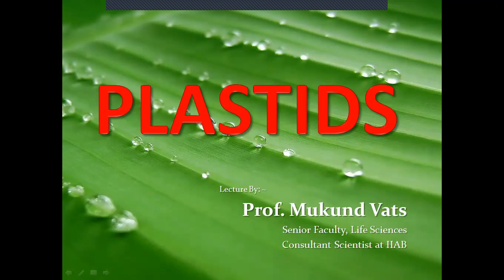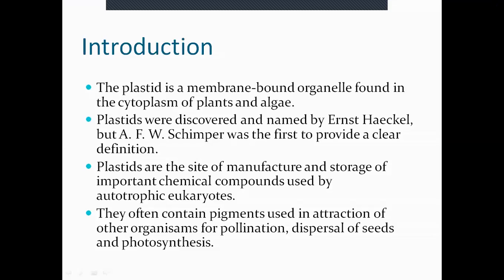Different types of functions they perform using these plastids, like photosynthesis, attraction of insects, and attraction of animals. Most of the plastids are used for storage purposes of different macromolecules required in plants. So let's start.